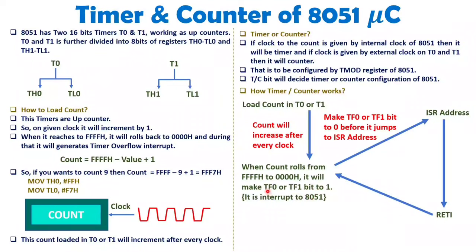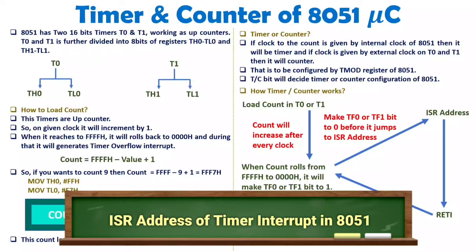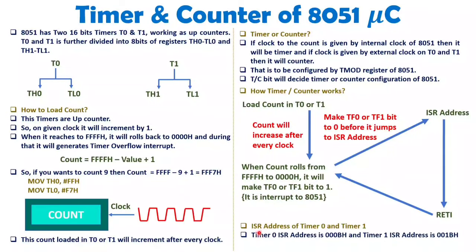TF0 is the interrupt bit for timer 0 and TF1 is the interrupt bit for timer 1. When these interrupts are generated, there are well-defined ISR addresses: for timer 0 (TF0), the ISR address is 000B hex, and for timer 1 (TF1), the ISR address is 001B hex. Program control transfers to these locations when the timer count rolls from FFFF to 0000.